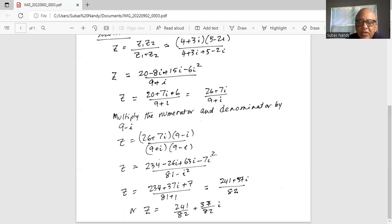We separate this into the real number portion and the complex portion. So we divide by 82 in the numerator and denominator. So 241 by 82 for the real part, plus 37 by 82 for the imaginary part, which is the coefficient of the imaginary number i.